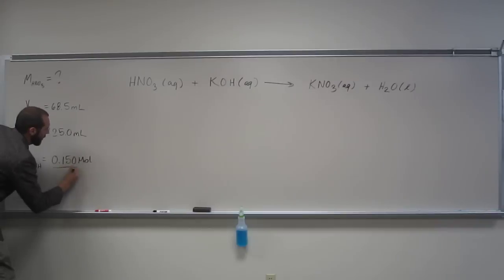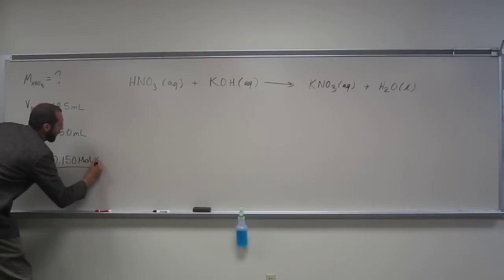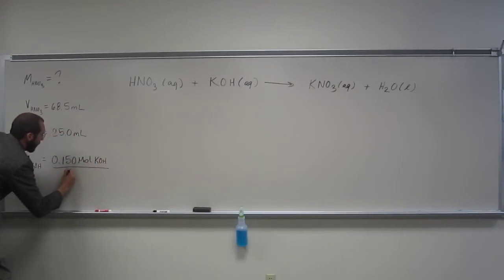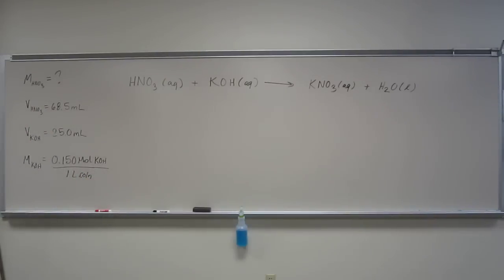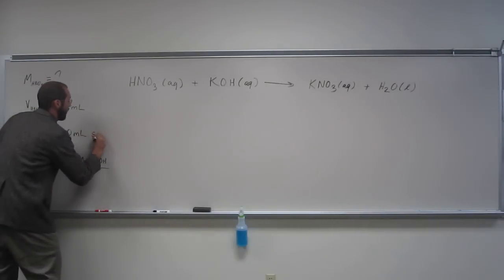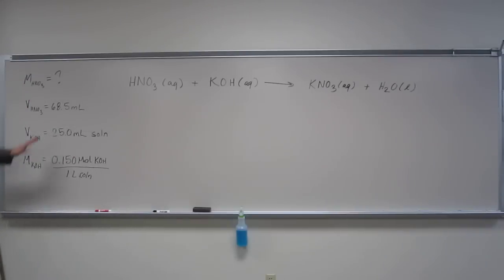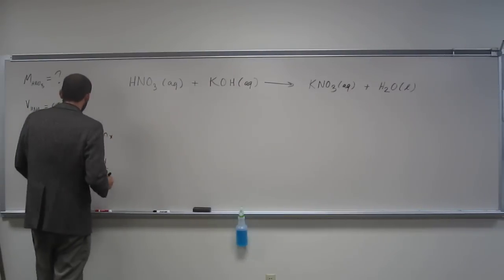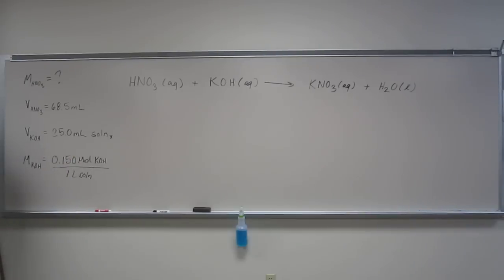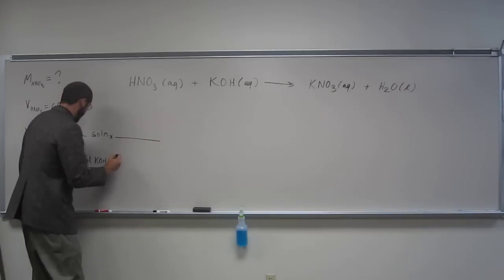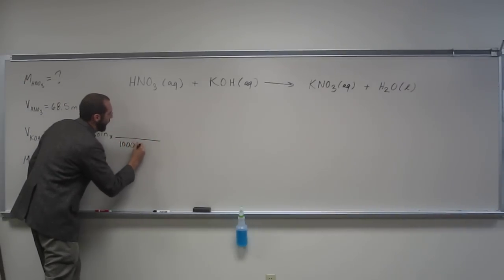So I'm going to change it, so moles of KOH per one liter of solution, like that. So remember, this here is milliliters of solution. Is everybody okay with that? So let's convert this to liters so we can use this conversion factor to figure out how many moles of KOH we have in 25 milliliters of the solution. Is everybody okay with what I'm doing so far? And if you're not, tell me.